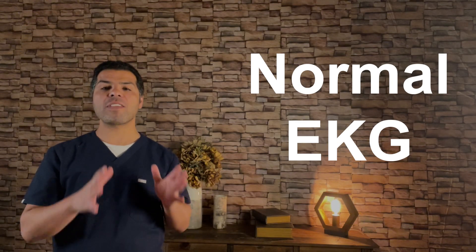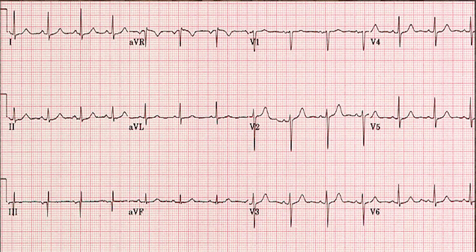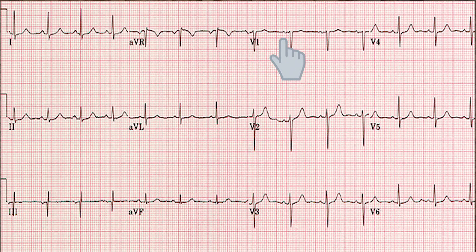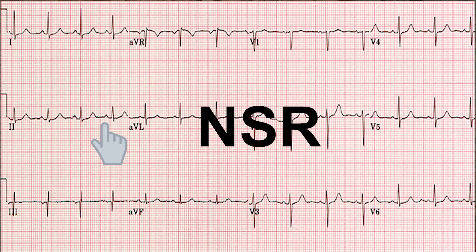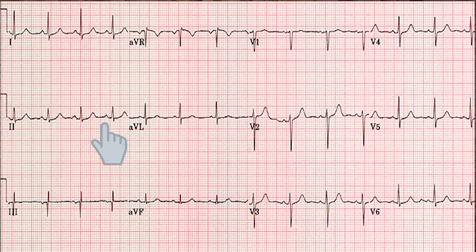A normal EKG should have the following characteristics. An upright P-wave in all leads except AVR. In leads V1 and V2, the P-wave can be either upright or terminally inverted. The P-wave should be consistent in shape and size within the same lead. A consistent upright P-wave in lead 2 means normal sinus rhythm; missing this finding rules out normal sinus rhythm.